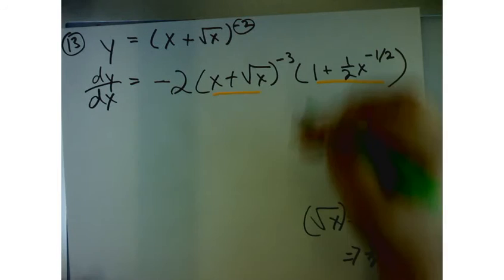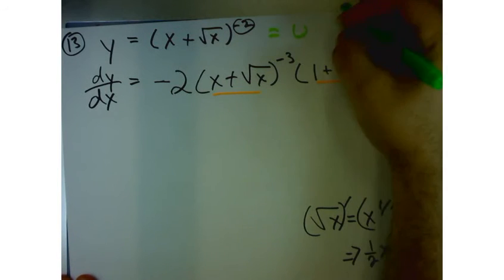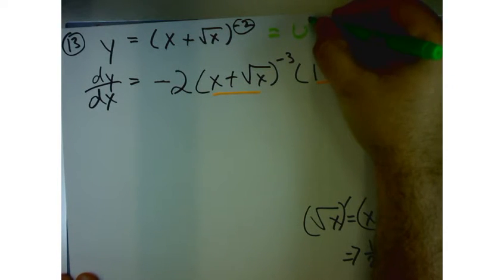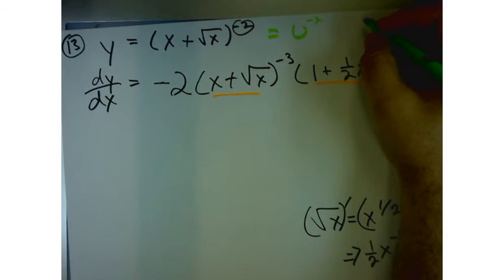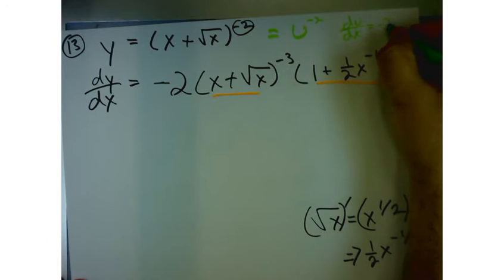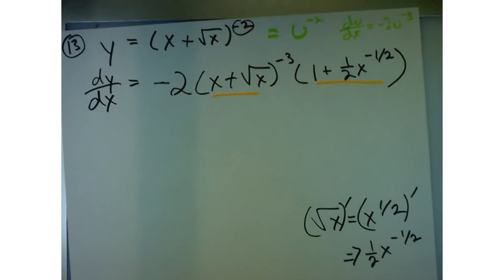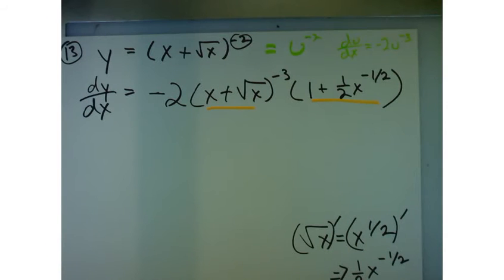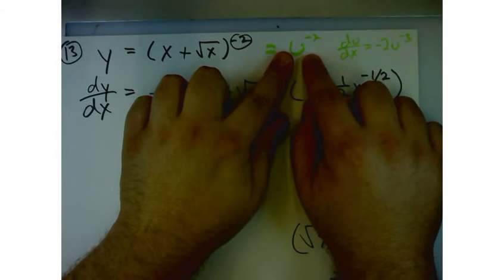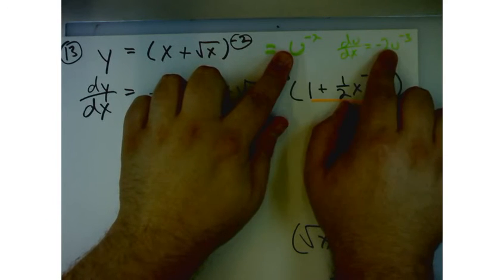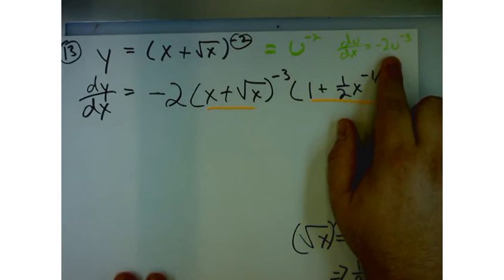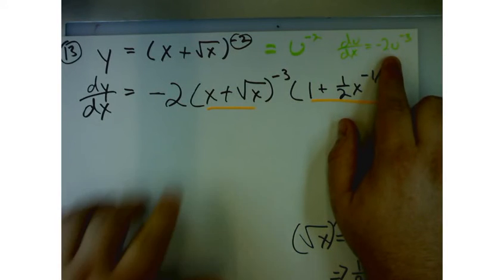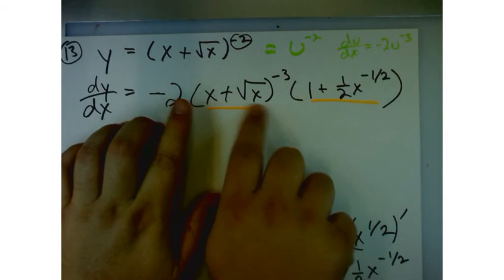In other words, what Mr. Adams is thinking in his head is that this is u to the negative 2. And so the derivative of that, dy du, is equal to negative 2u to the negative 3. So now that I've taken the derivative of that, I still have to take the derivative of u. So then the derivative of u is just the stuff on the inside. And so when I take the derivative of u and tack that on to the back end of it, that's what I'll get.